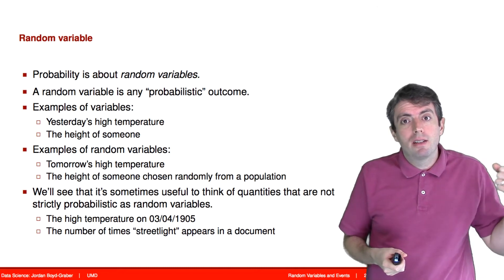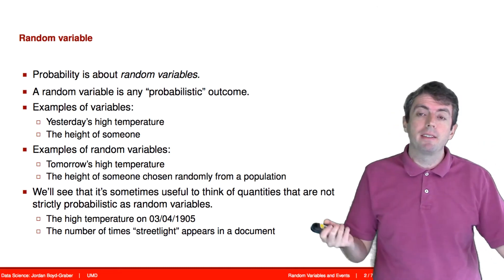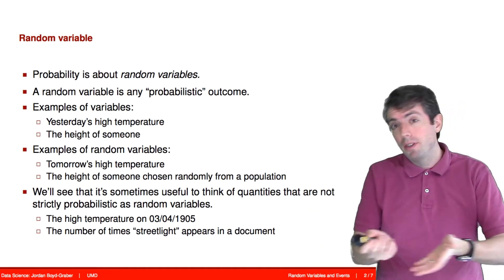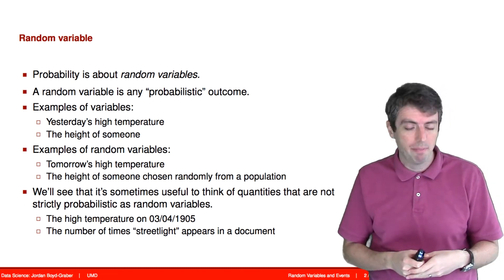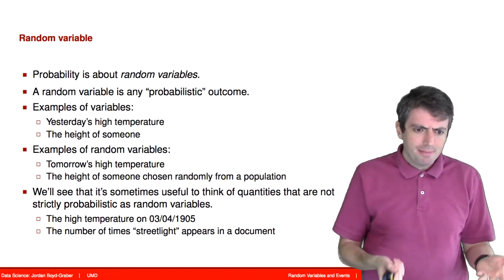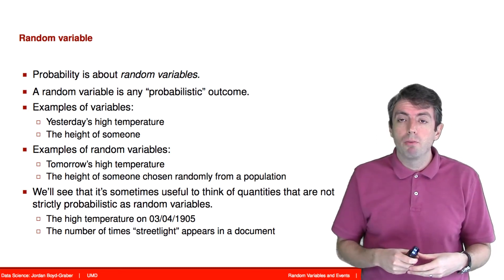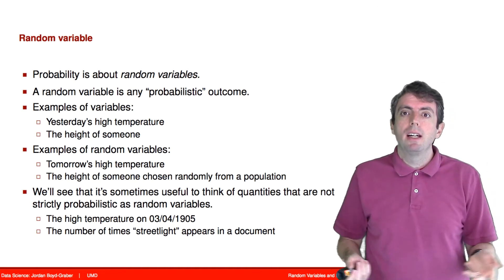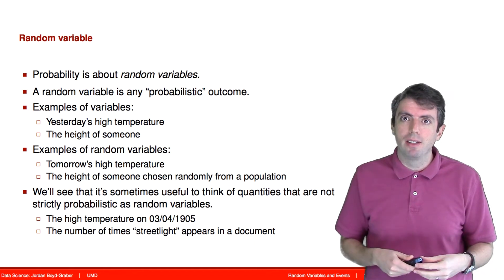So the temperature on a particular day in history is not a probabilistic event. It's already happened. We know with certainty what it was up to the measurement of capabilities of the thermometers of the time. But it's often useful to think about it as a random variable. Similarly, if we look at how many times the word streetlight appears in some document, and we model that as a random variable, that is computationally attractive.